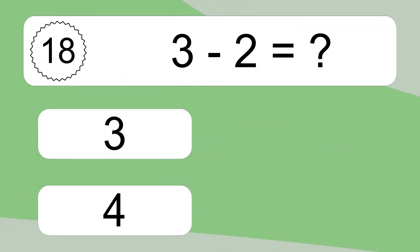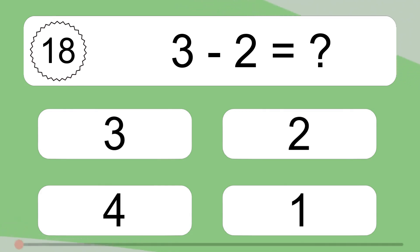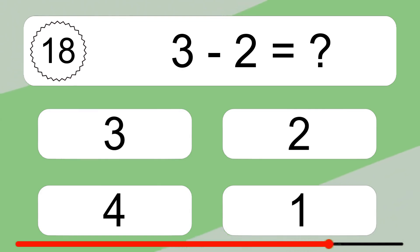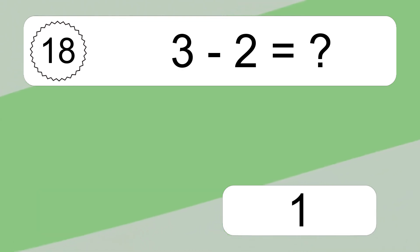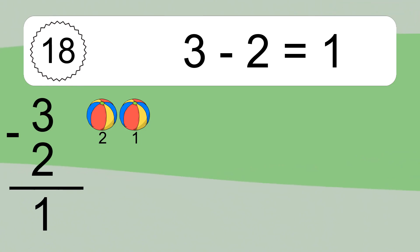3 minus 2 equals what? 3 minus 2 equals 1. Let's count it: 2, 1.